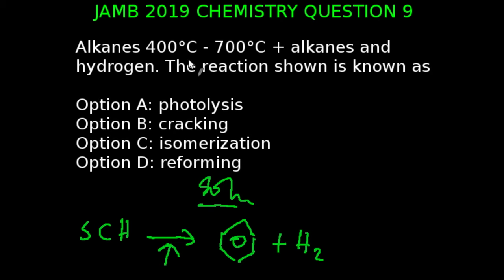You're looking at question nine of the JAMB 2019 chemistry examination. Alkanes heated 400 degrees Celsius to 700 degrees Celsius, giving hydrogen. This reaction is known as... When straight-chain hydrocarbons, such as alkanes, are heated under high temperature to give hydrogen as a by-product and benzene ring, that process is known as reforming. The correct answer to this question is option D.